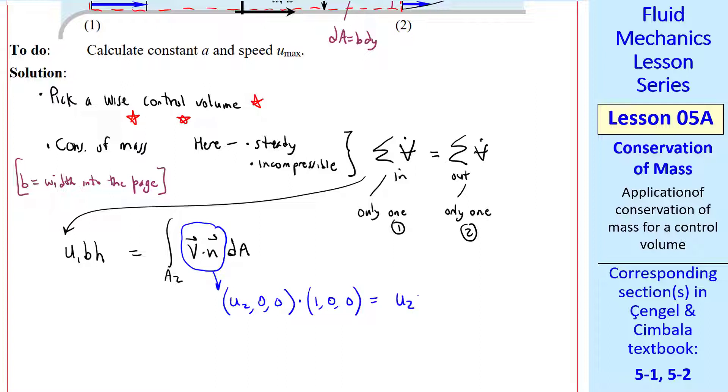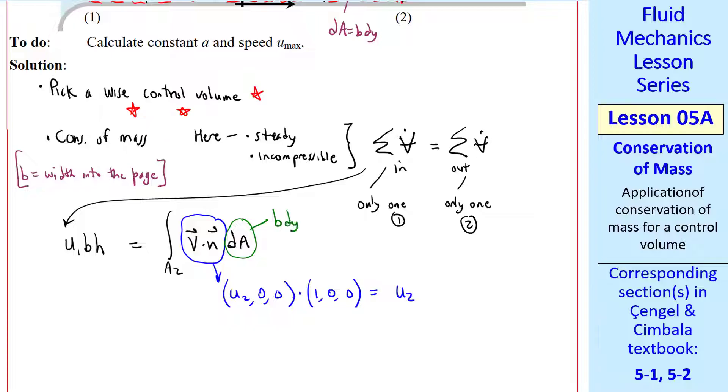And we're taking the dot product with N, which is 1, 0, 0. So this just gives us U2. dA, as I said, is B times dy. So this area integral becomes the integral from Y equals 0 to H, U2, times B dy.